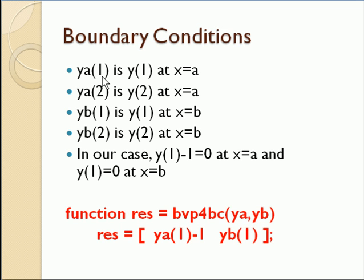So ya of one is the first variable at the left edge. ya of two is the second variable, or z in our case, at the left edge. yb of one is the first variable, or y at the right edge. yb of two is z at the right edge.